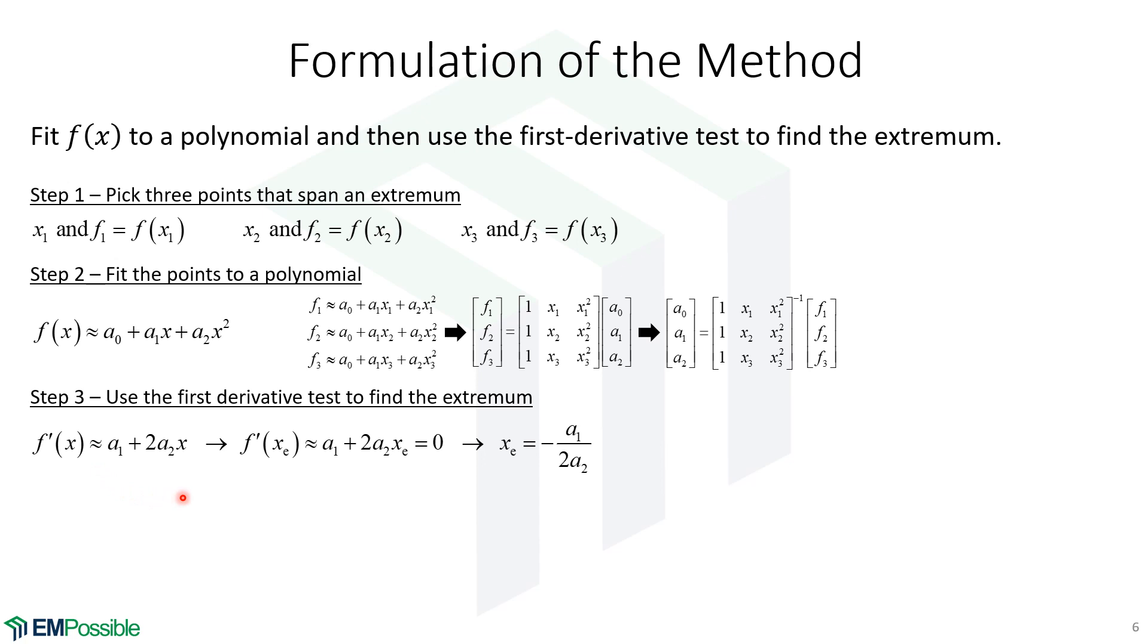So we set that equal to zero. And when we set it equal to zero, we're finding x extremum, where the extrema is. Now we can solve for it. So we see that the extrema x sub e is minus a1 over 2a2. And so we've calculated our polynomial coefficients up here. So that tells us immediately where the extrema is.